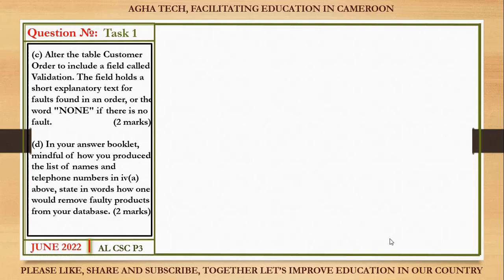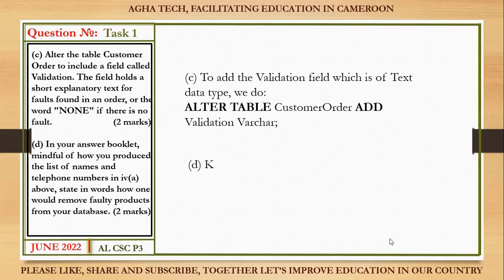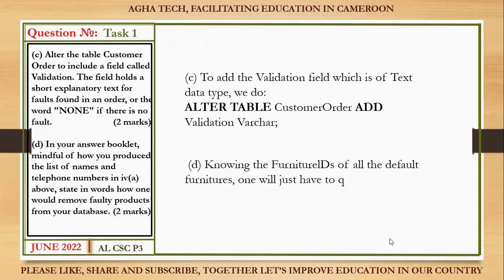Part c: alter the CustomerOrder table to include a field called 'validation'. The field holds a short text explanation for faults found in an order, or the word 'known' if there is no fault. To alter a table: ALTER TABLE CustomerOrder ADD validation VARCHAR; That covers Task One.